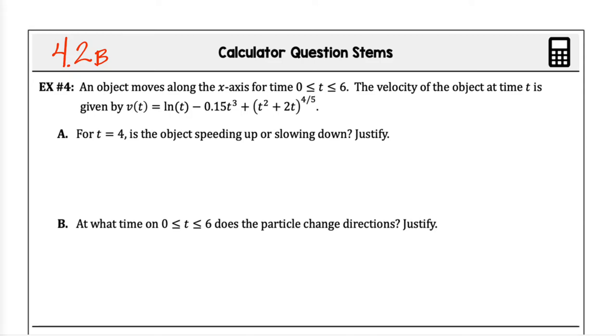This is still 4.2. I don't know what page it is, but you should have the packet now. It's the last page of examples for 4.2. An object moves along the x-axis for time 0 to 6. The velocity of the object at time t is given by v of t equals that. For t equals 4, is the object speeding up or slowing down? Justify.